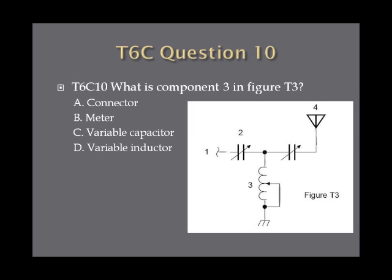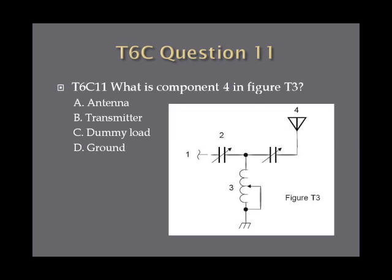Question 10: What is component 3 in figure T3? A. Connector. B. Meter. C. Variable capacitor. Or D. Variable inductor. Question 11: What is component 4 in figure T3? A. Antenna. B. Transmitter. C. Dummy load. Or D. Ground.